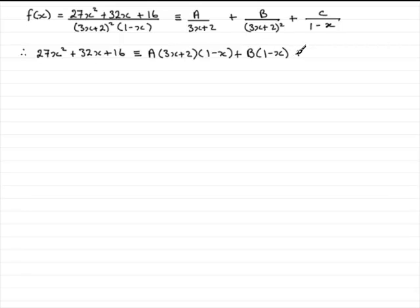And then on the last term, if we multiply again this term with the denominator, it's the 1 minus x that gets cancelled out, leaving me with 3x plus 2 all squared multiplied by the c. Okay, so we've got that line now. All we need to do is find out the value of these constants a, b, and c.